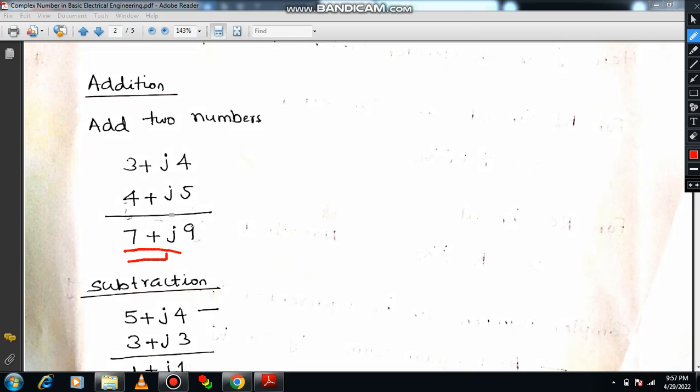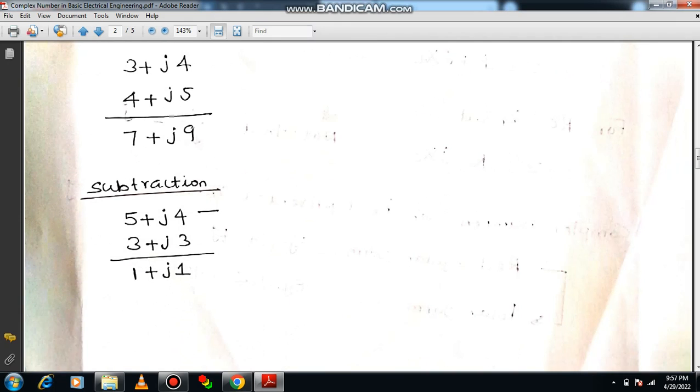3 plus J4 plus 4 plus J5. 3 plus 4 is 7, 4J plus 5J means 9J or 9I. Same way you can solve the subtraction also. Do the operation by real part and imaginary part separately. So real part is 5 and 3, so 5 minus 3 is 2. So imaginary part is 4J and 3J. 4J minus 3J means 1J or you can write 2 plus J.